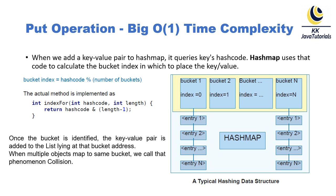For the put operation, HashMap gives a time complexity of O(1) if no collision occurs. When we add a key-value pair to HashMap, it queries the key's hash code. HashMap uses that hash code to calculate the bucket index in which to place the key-value pair, by calling an index-finding method to locate the correct bucket.